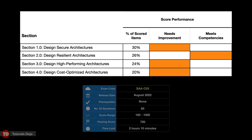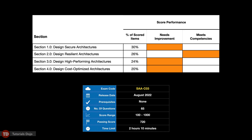AWS uses a compensatory scoring model, which means that you do not necessarily need to pass each and every individual section. You will pass this exam as long as you get an overall score of 720 across all four domains. Each section has a specific score weighting that translates to the number of questions, so some sections have more questions than others. Your score performance table highlights your strengths and weaknesses that you need to improve on.